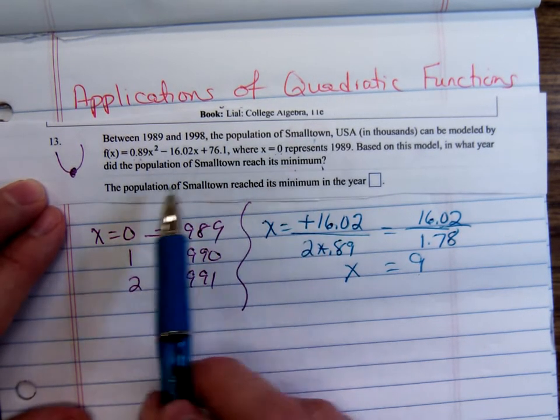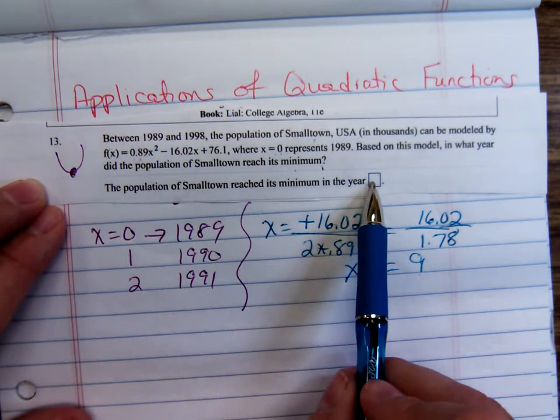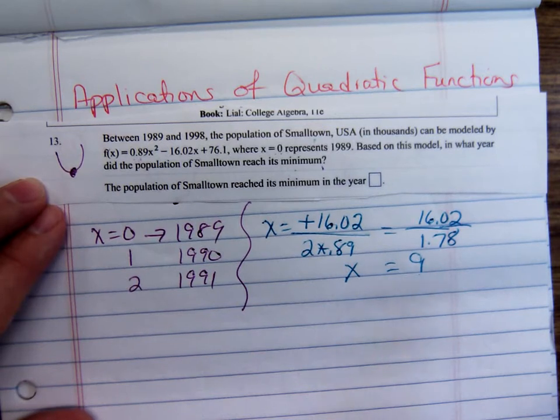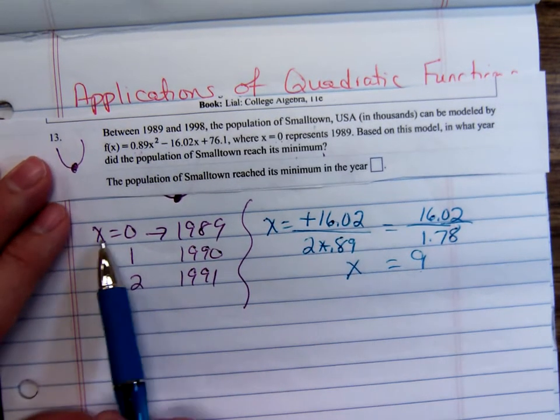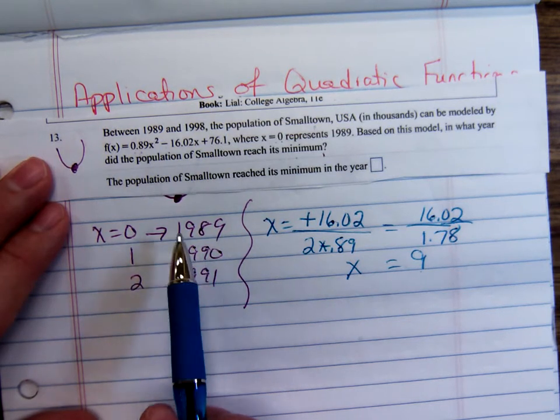What number am I going to put here? I'm not going to say the population reached its minimum in the year 9. Look back at how we define these x's. x is basically the number of years since 1989.